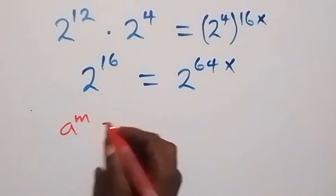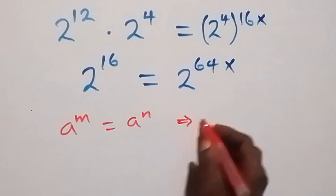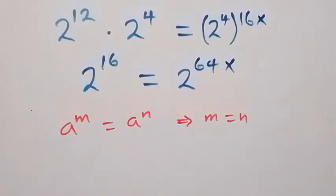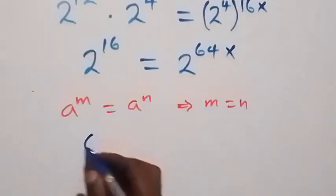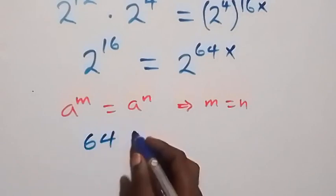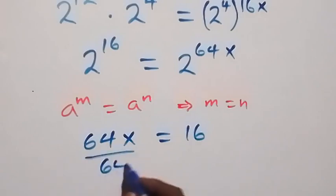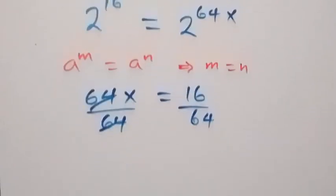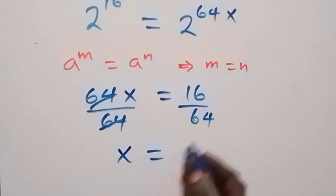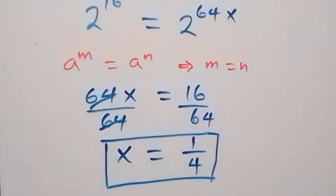Since a raised to power n equals a raised to power n means the exponents are equal, we equate the powers and have 64x equals 16. Dividing both sides by 64, the 64s cancel and we get x equals 16 over 64, which simplifies to the lowest fraction: x equals 1 over 4.